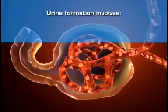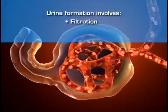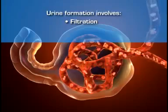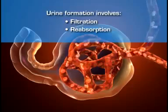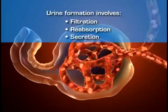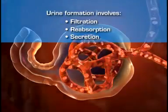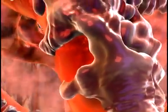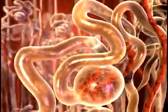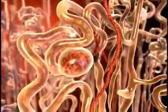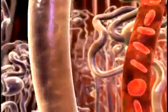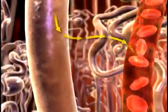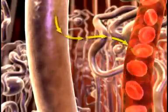Urine formation involves the filtration of the blood by the glomerulus to form an ultrafiltrate of urine, the tubular reabsorption of electrolytes and nutrients needed to maintain the constancy of the internal environment, and the secretion of waste materials. Filtration occurs as blood flows into the glomerulus from its afferent arteriole, and plasma moves through the glomerular capillaries into Bowman's space. From Bowman's space, the glomerular filtrate moves into the tubular segments of the nephron, where through tubular reabsorption, electrolytes and nutrients move from the filtrate back into the bloodstream.